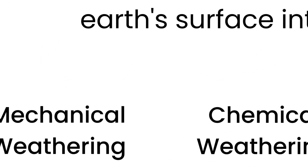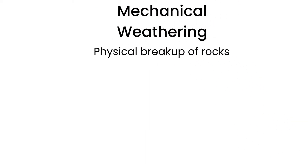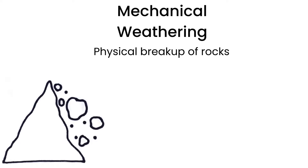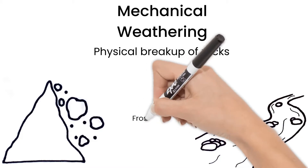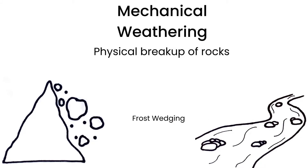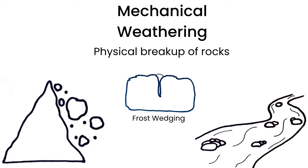Let's take a look at mechanical weathering. Mechanical weathering is the physical breakup of rocks. This could include rocks falling down a hill and breaking apart, or rubbing against other rocks in a stream. Frost wedging is also mechanical weathering. Frost wedging is when water gets into a crack of a rock then freezes. When water freezes, it expands, making the crack bigger. After many cycles of freezing and thawing, frost wedging could break a large rock right in half.